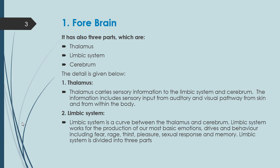Number two: limbic system. The limbic system is a curve-shaped arc between the thalamus and cerebrum. Limbic system works for the production of our most basic emotions. It also includes drives and behaviors — such as fear, rage, trust, pleasure, sexual response, and memory.